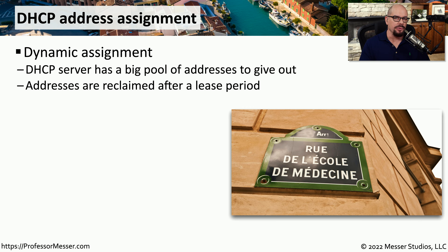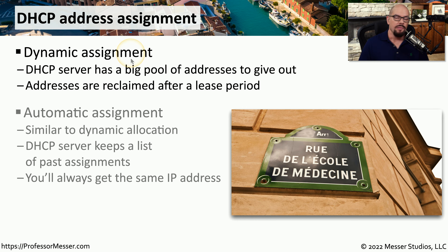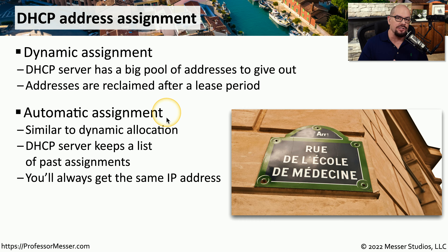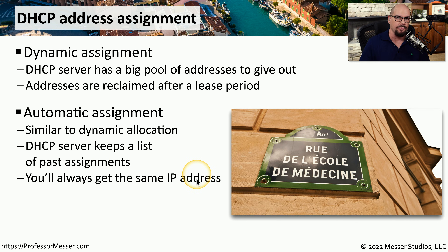For most devices connecting to a network and receiving a DHCP address, they're receiving a dynamic assignment. This means that they could receive any IP address from that large pool of IP addresses that we've previously configured. After your lease period has timed out, those addresses will be available for another person who connects to the network. Many DHCP servers will also have an automatic assignment where they keep a list of everyone who's previously connected to the network, and if you connect again after a short period of time away, it will remember your previous assignment. If that IP address is still available, it will assign you the same IP address you had originally.